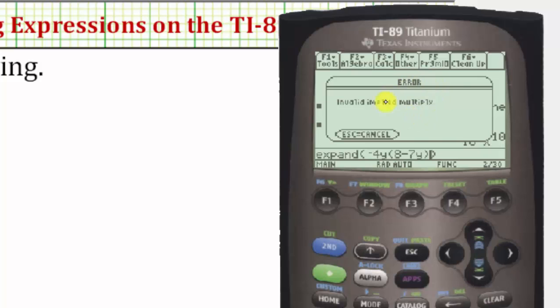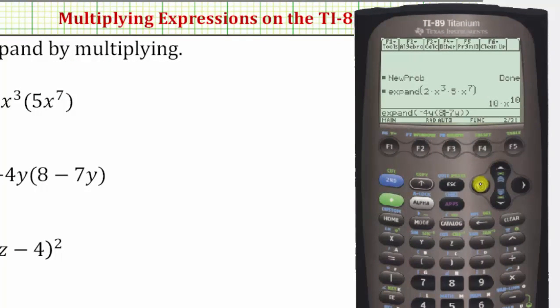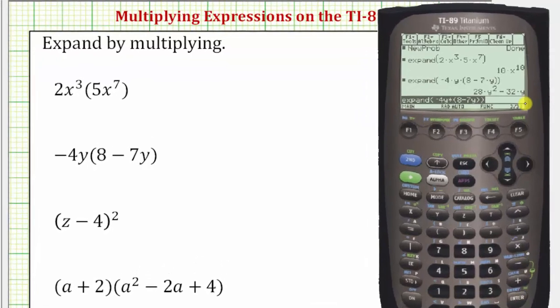And notice how, as I mentioned, we do get an error. It says invalid implied multiplication, which means we need to include multiplication between this first term and the binomial so that we do not receive this error. Let's press escape to cancel, use the left arrow, place it right after the y in negative four y, enter multiplication, and then enter again,